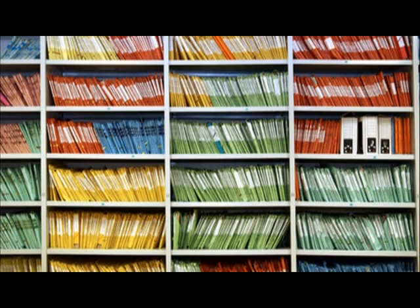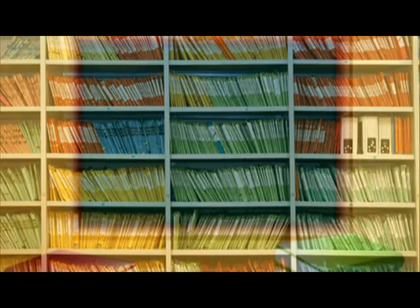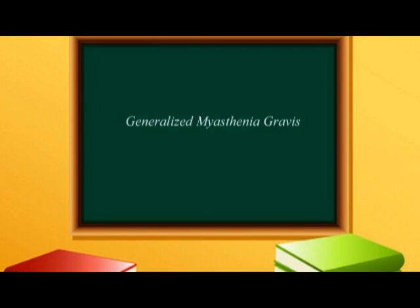If we classify myasthenia gravis, there are actually five or six classifications, from just the eyes to something very severe. Yes. Most importantly is the distinction between pure ocular myasthenia gravis and then generalized myasthenia gravis.